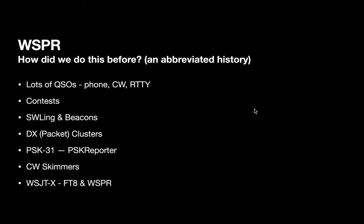What did we do before we had WSPR? In the old days, we'd make a lot of QSOs. The best way to make a lot of QSOs in a short time was to participate in contests. You could talk to several hundred, perhaps even multiple thousands of people. A lot of folks would listen to see what other hams or even broadcast stations they were hearing. There were a lot of beacon stations implemented so you could see what the propagation was like. DX clusters — first we had packet clusters, now we've got them online — a good way to see who's talking to whom and where in the world.